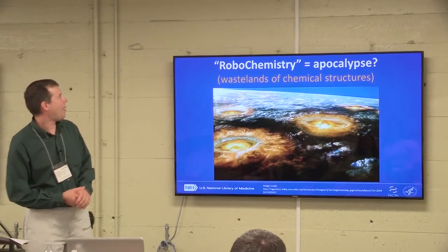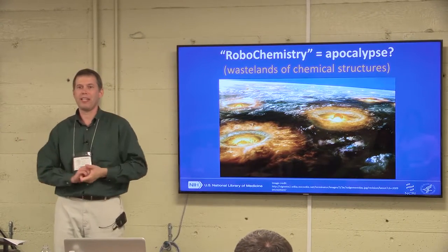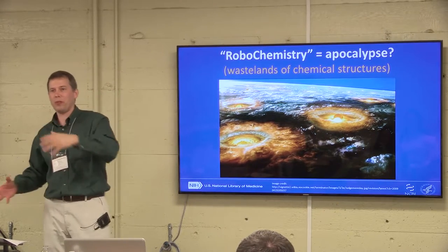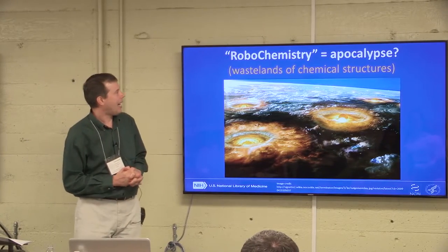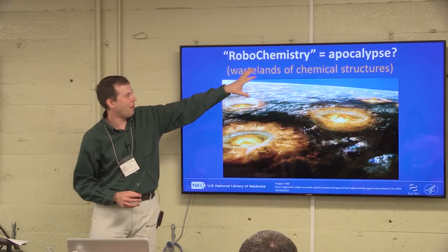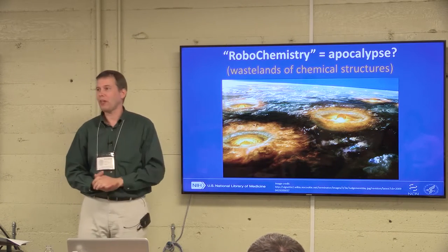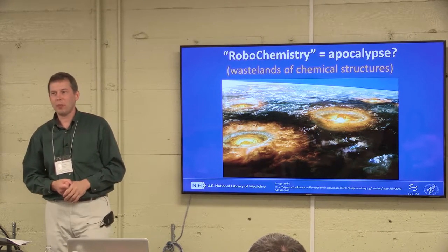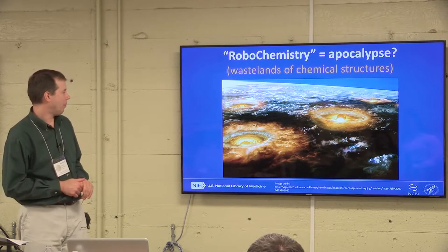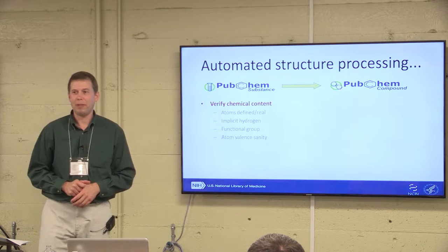When you think about all the different groups of molecules and resources out there on the internet, and you have robochemistry going on where they each have their own normalization approach when they gather and aggregate content, it's kind of like nuclear bombs going off at each of the different repositories around the world. We have these wastelands of chemical structures where we're modifying them in some unsavory way so they're no longer what people originally had. But what do you do? You build a better robot.